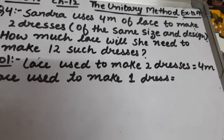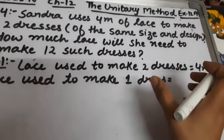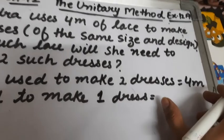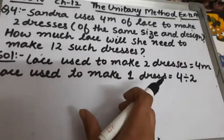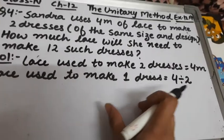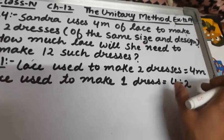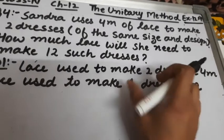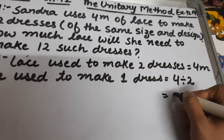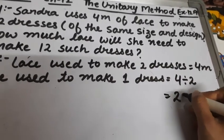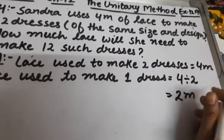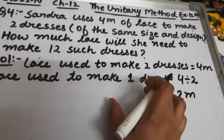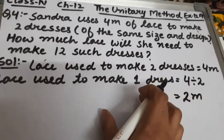Lace used to make 2 dresses is 4 meters. Lace used to make 1 dress will be: we will divide 4 by 2, which gives us 2 meters. So 2 meters of lace is used to make 1 dress.